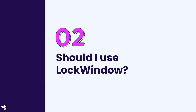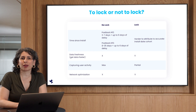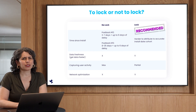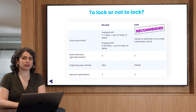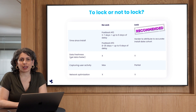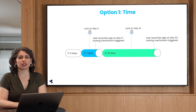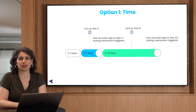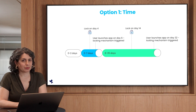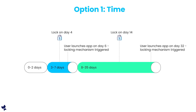Moving to question two: should you use lock window? Yes. We recommend that you use lock window for data freshness. It can take up to 13 days for the second postback to be delivered, so why not get it sooner if you can? There are two options. The first: lock the window after a predetermined period of time has passed. The benefit of lock window is that it allows you to freeze measurement and lock in the conversion value to receive postbacks sooner.